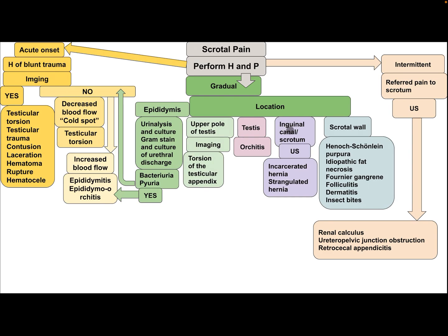If pain is in the inguinal canal or scrotum, the patient needs ultrasound — consider incarcerated or strangulated hernia. If pain is in the scrotal wall, the differential diagnosis includes Henoch-Schönlein purpura, idiopathic fat necrosis, Fournier's gangrene, folliculitis, dermatitis, and insect bite. If the pain is intermittent, this is referred pain to the scrotum; the patient needs ultrasound, and the differential includes renal calculus, ureteropelvic junction obstruction, and retrocecal appendix.